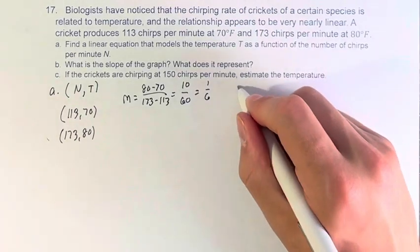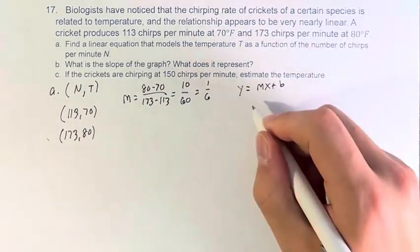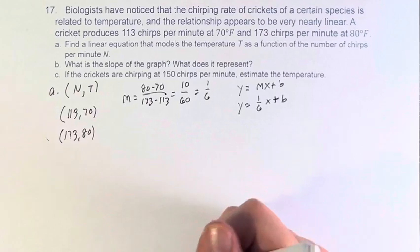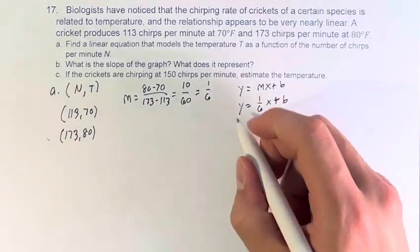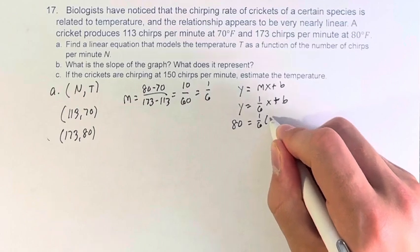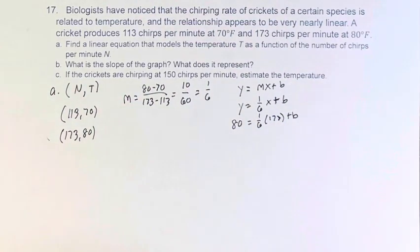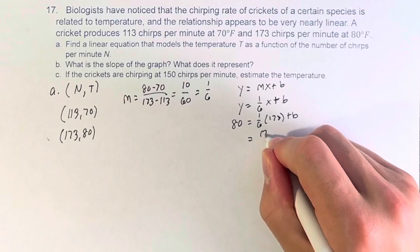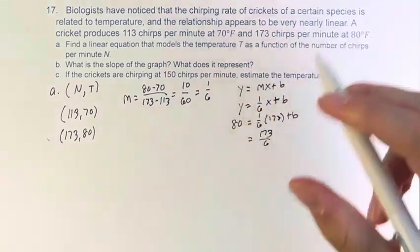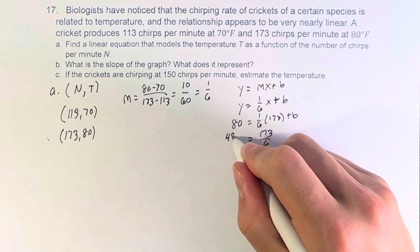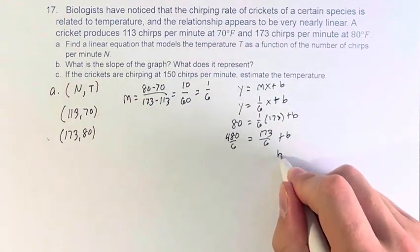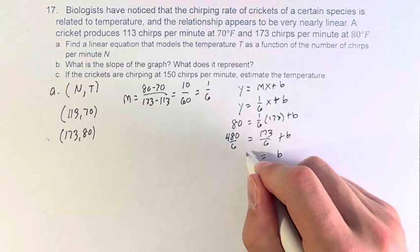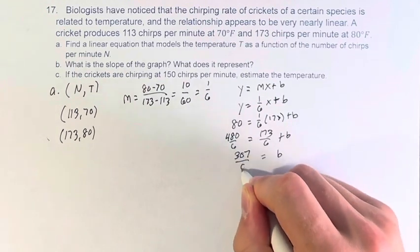Now we need the y-intercept. So if we have y equals mx plus b, we plug in m, y equals 1/6 x plus b. Now we can plug in the value of one of our points, that's 80 equals 1/6 times 173 plus b to solve now for b. This is 173 over 6, we want to subtract, so let's turn this into 6. 80 times 6 is 480, so this is 480 over 6 plus b. Therefore b is equal to 480 minus 173 which is 307 divided by 6.